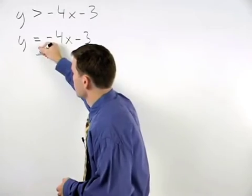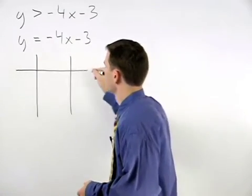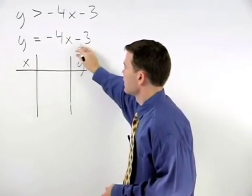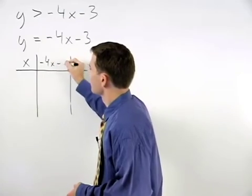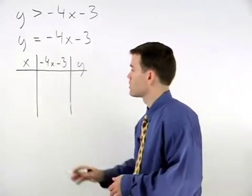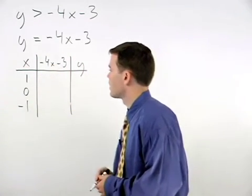So setting up our chart, we have our x's, our y's, and negative 4x minus 3. Plugging our values of 1, 0, and negative 1 in for x...